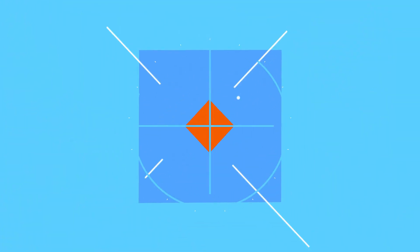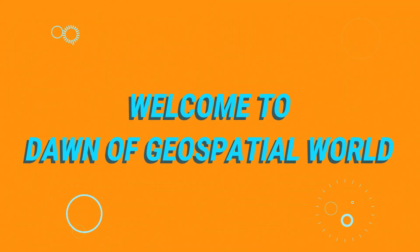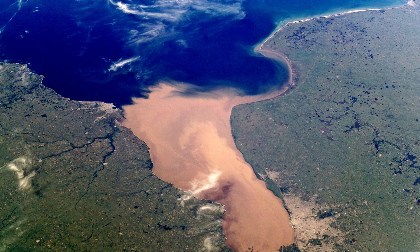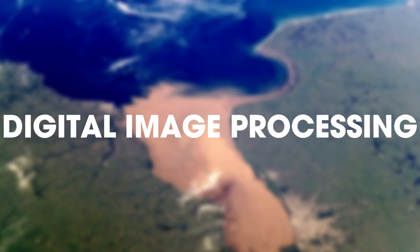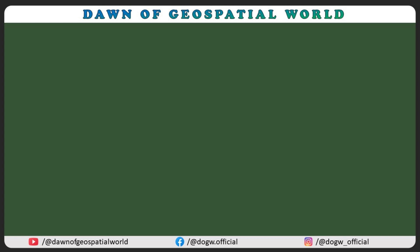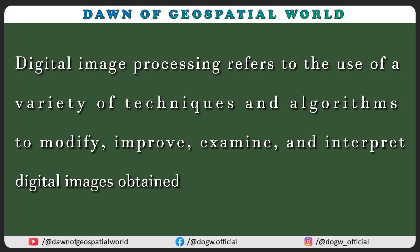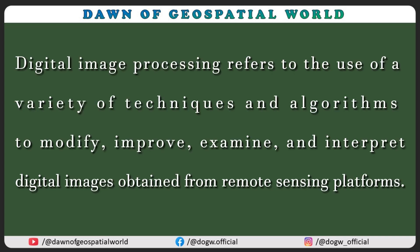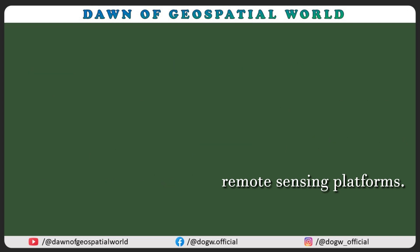Welcome to a new video of Dawn of Geospatial World. In remote sensing, you may have heard about digital image processing. Digital image processing refers to the use of a variety of techniques and algorithms to modify, improve, examine, and interpret digital images obtained from remote sensing platforms.